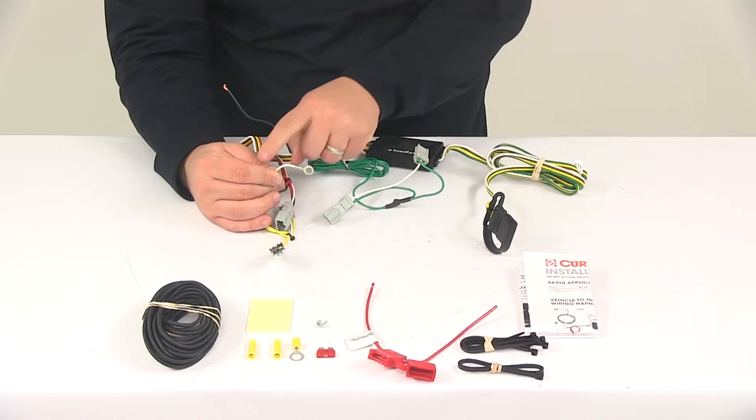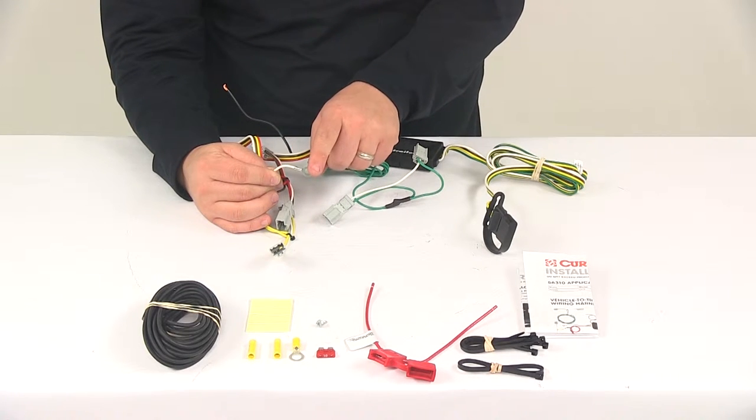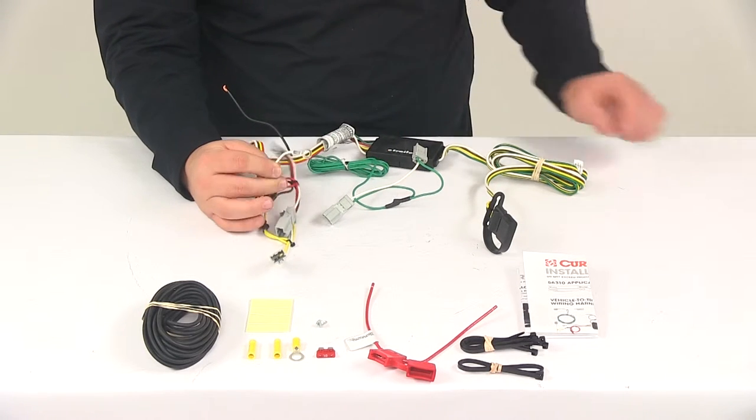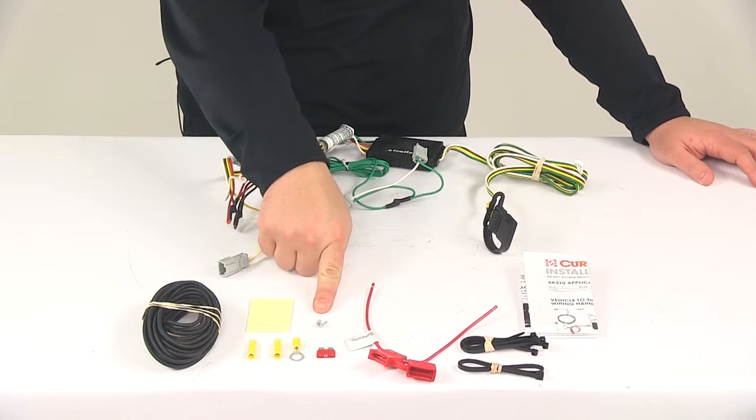you'll need to make your ground connection. Your ground wire is your white wire with the ring terminal attached to it. You want to get that grounded to a nice clean metal surface using the included grounding screw.